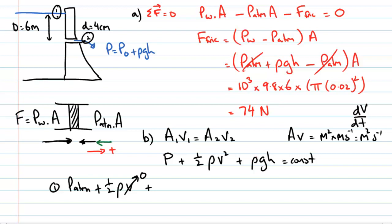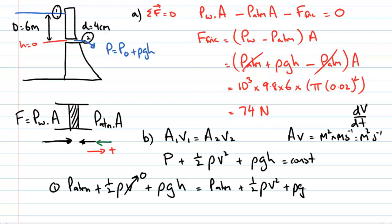We set the zero of potential energy at the height of the horizontal pipe, so h = 0 at the pipe level, making h = 6 metres at the top surface. At point two, the fluid exits into atmospheric pressure, travels horizontally at the pipe level so h = 0, meaning the potential energy density term is also zero.